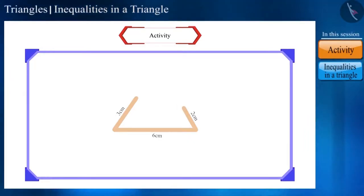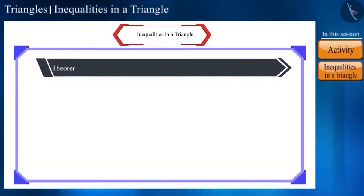The construction of a triangle is possible only if the sum of the lengths of any two sides of a triangle is greater than the length of the third side. And this is the theorem which says that.